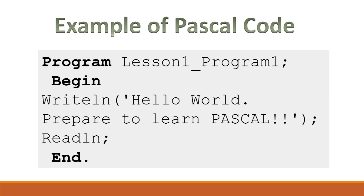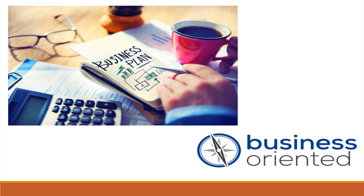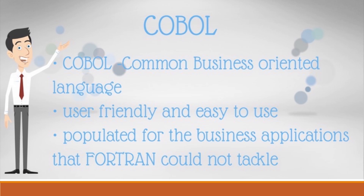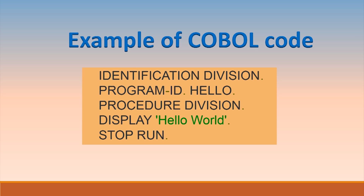COBOL, also known as Common Business-Oriented Language, is an imperative, procedural, and object-oriented language. COBOL is primarily used in business, finance, and administrative systems for companies and governments. Common features of COBOL include: it is user-friendly and easy to use, and it is popular in business applications that Fortran could not tackle. In an example of COBOL code, the language structure consists of divisions to execute statements. For example, 'STOP RUN' is a statement for exit.